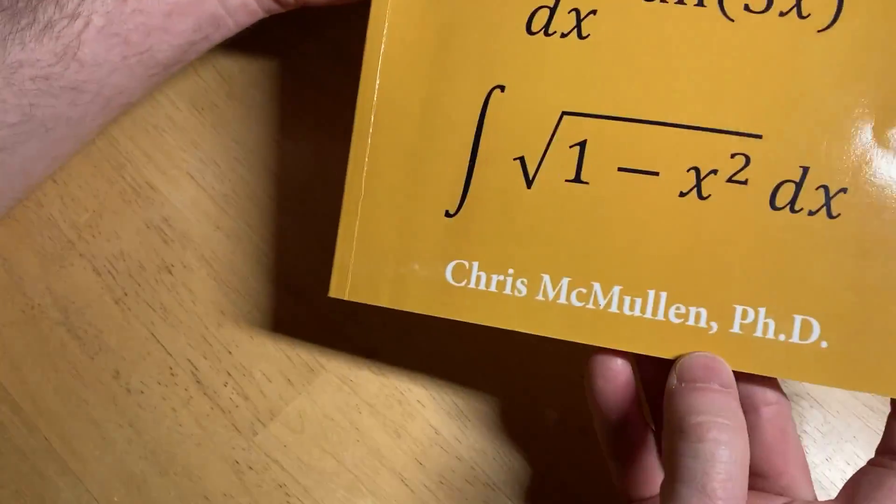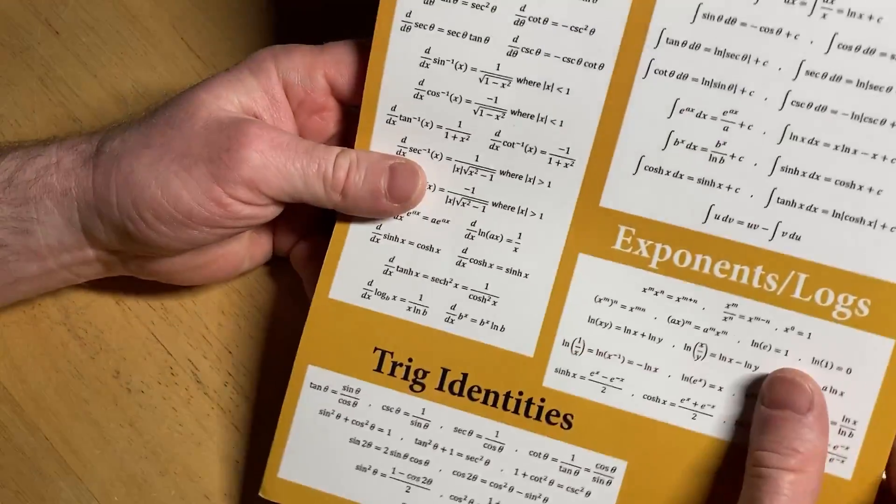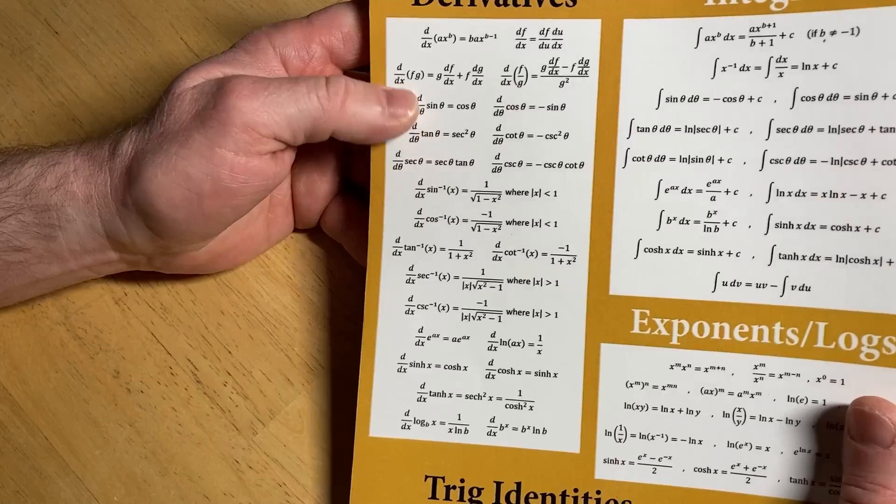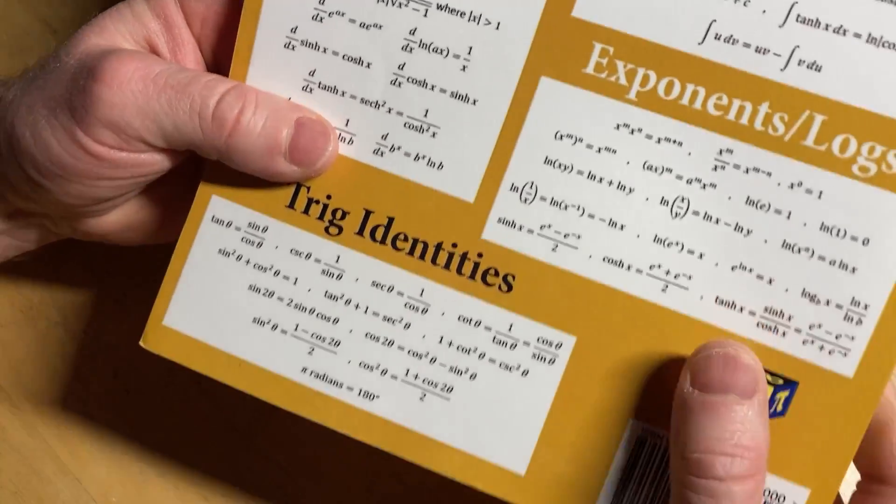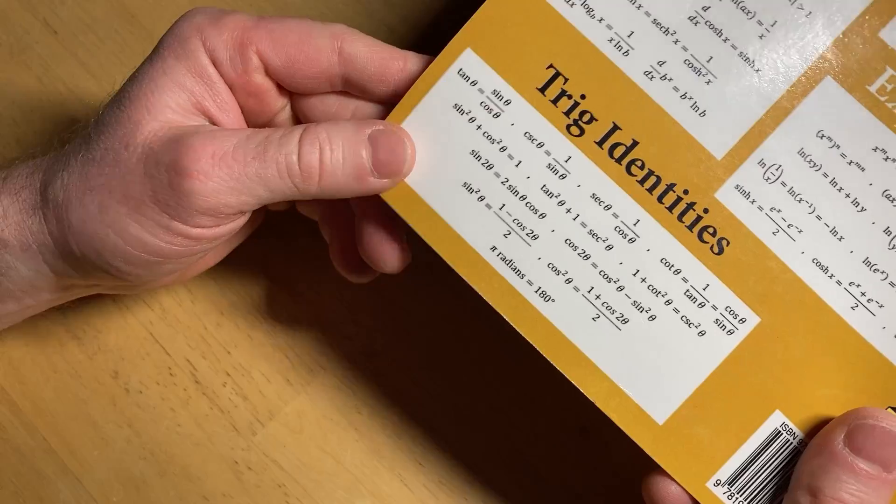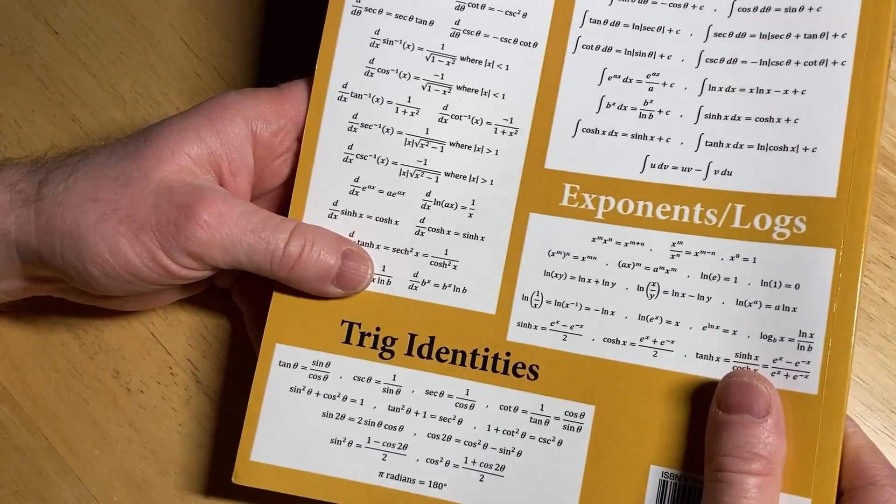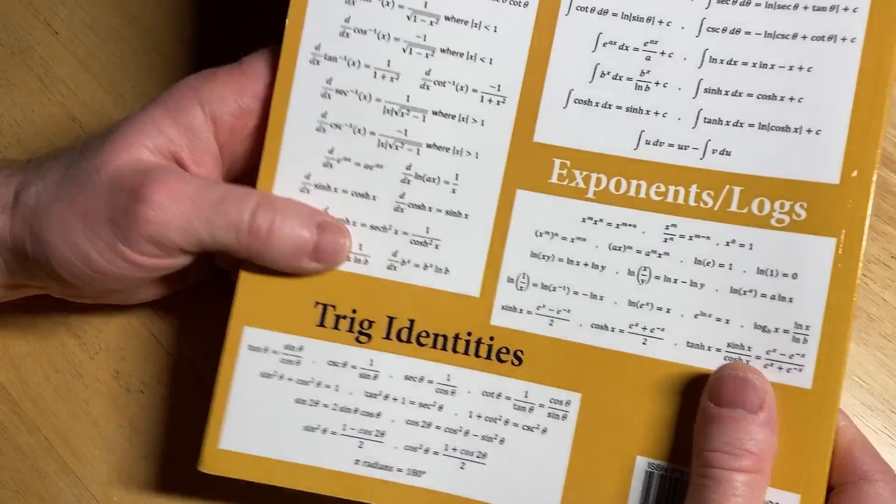So it's written by Chris McMullen, PhD. He's written other workbooks. Here on the back it has some derivatives, some integrals, some stuff with logs and exponents, and a couple trig identities that you might need. Useful things that you might need for the exercises in this book.